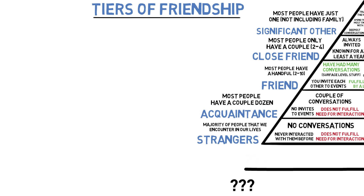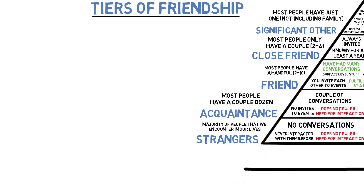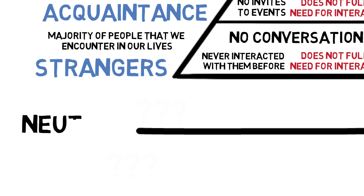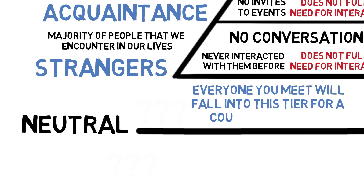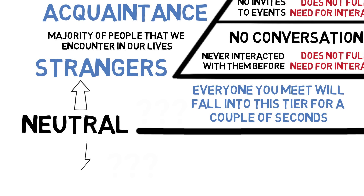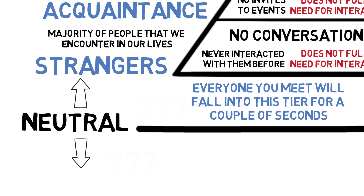So what are the two additional tiers? The first one is a tier I like to call the neutral tier. If you've just met someone, they will initially fall into this tier for a couple of seconds. That's how long it takes for our brains to sort out whether this person is a potential friend or a potential foe. If the person doesn't seem like they will pose a threat, we will automatically sort them up into the stranger tier. However, if they are giving off the wrong signals or come off a certain way, we will automatically sort them into the foe tier.